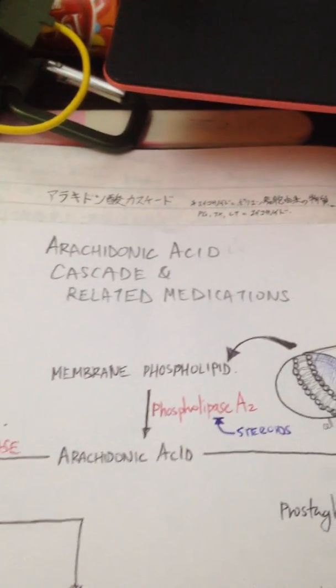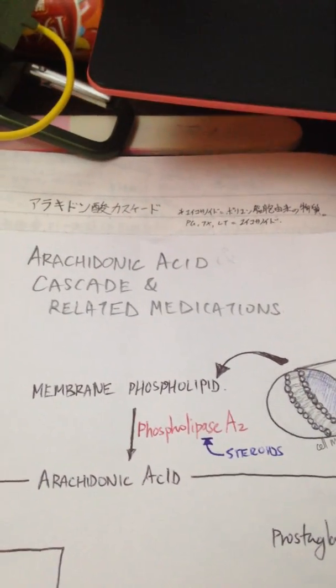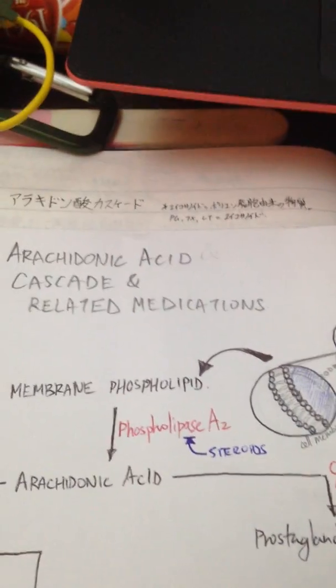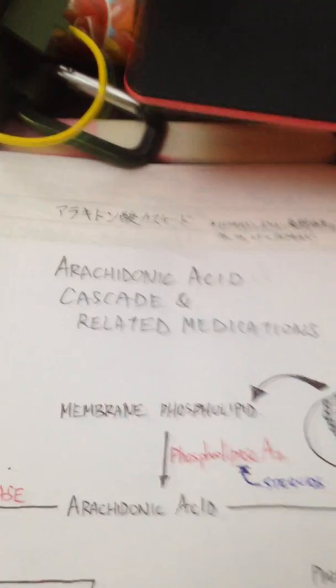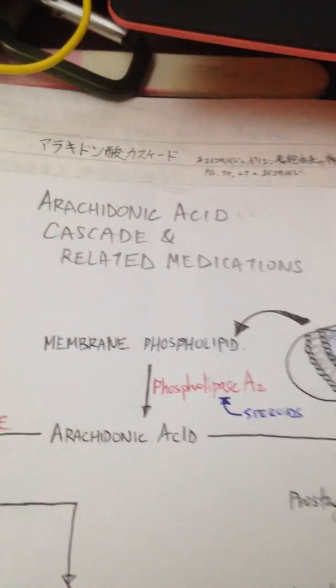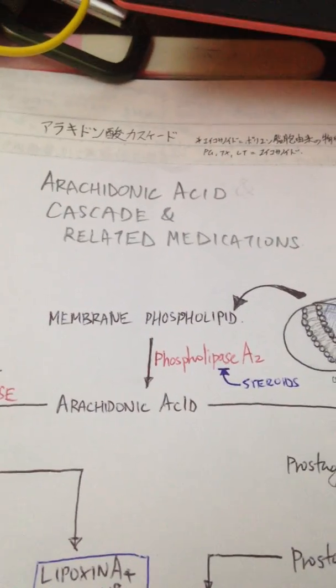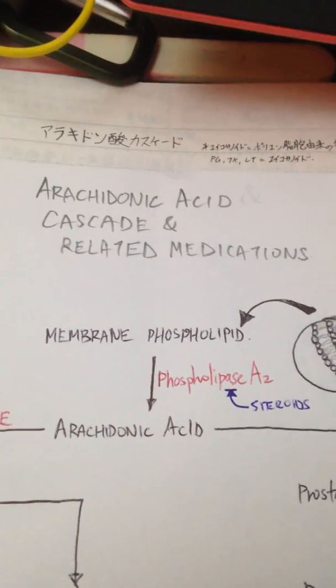Hello, today I'll be talking about the arachidonic acid cascade and some medications that are related very closely to this cascade of chemical reactions happening in our body. Let's talk about how it starts. Everything starts from the breakdown of membrane phospholipid by phospholipase A2.